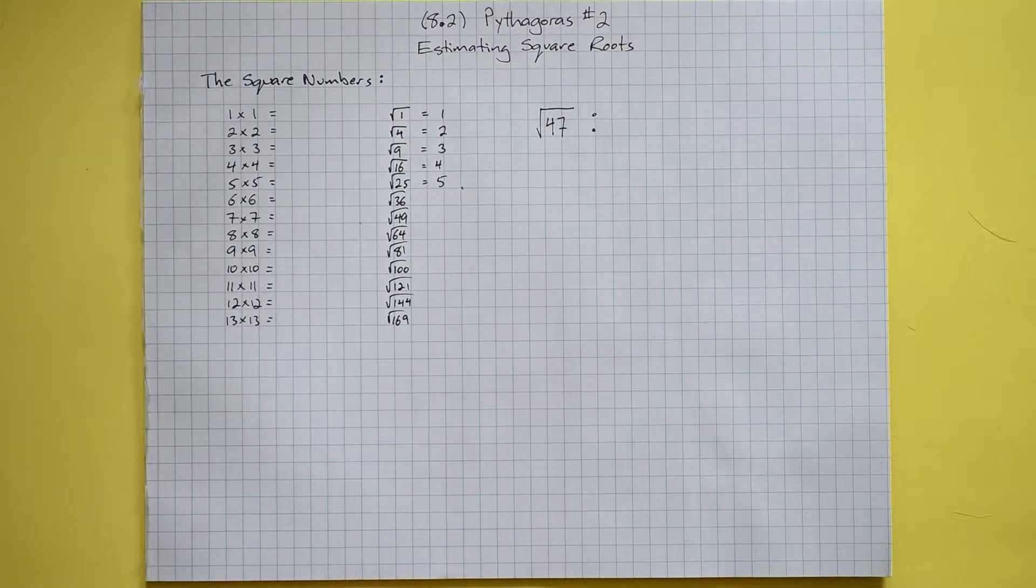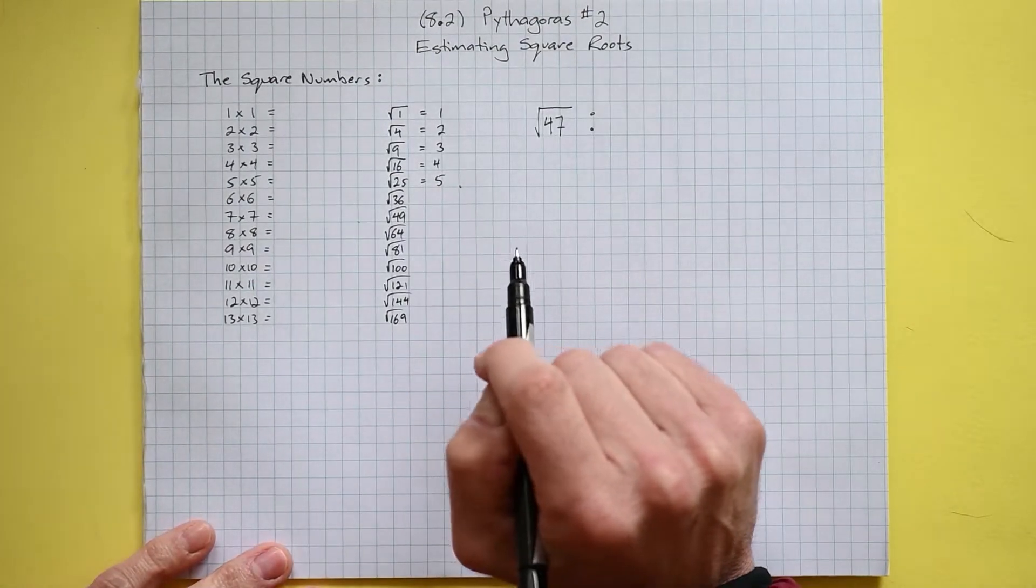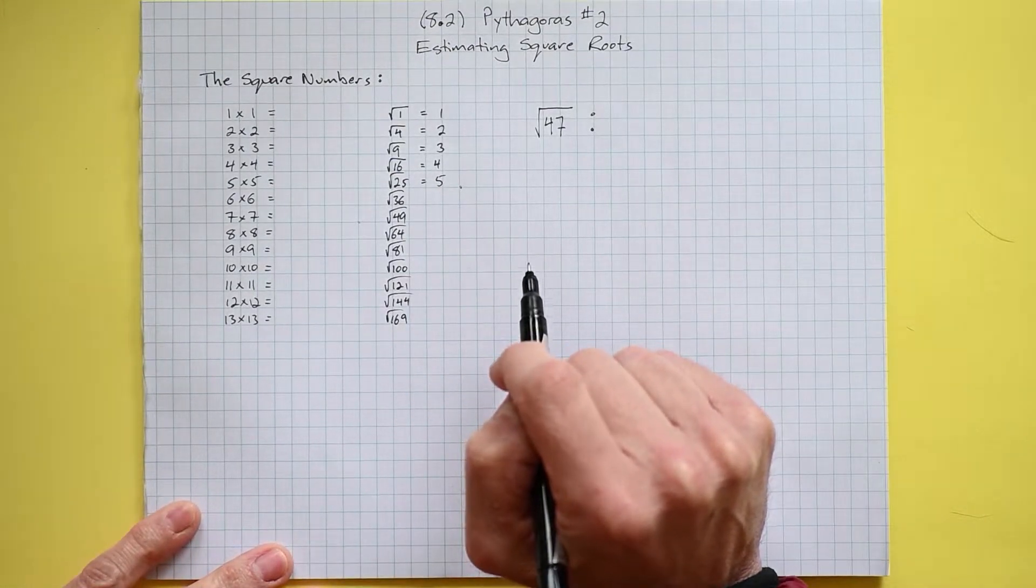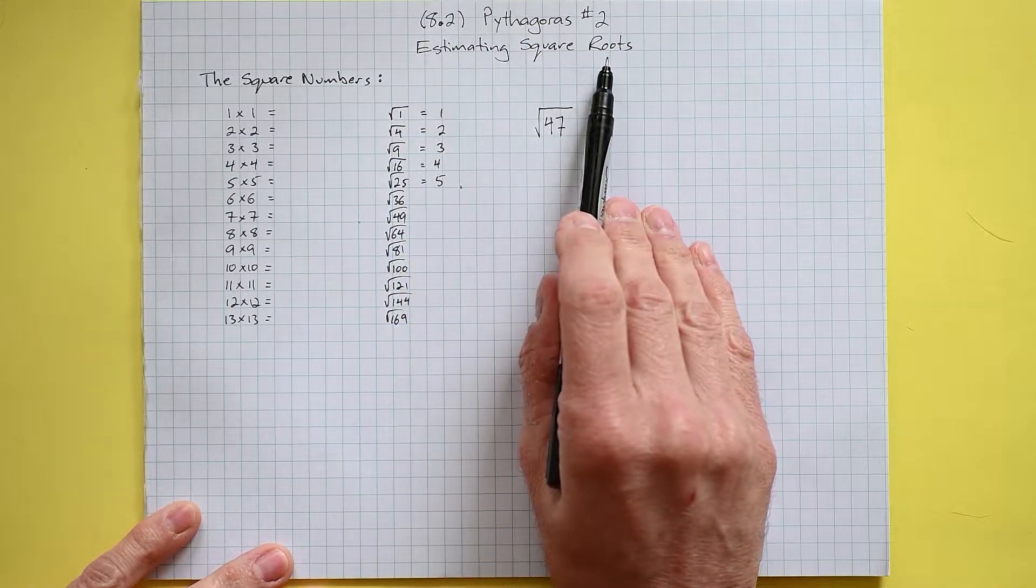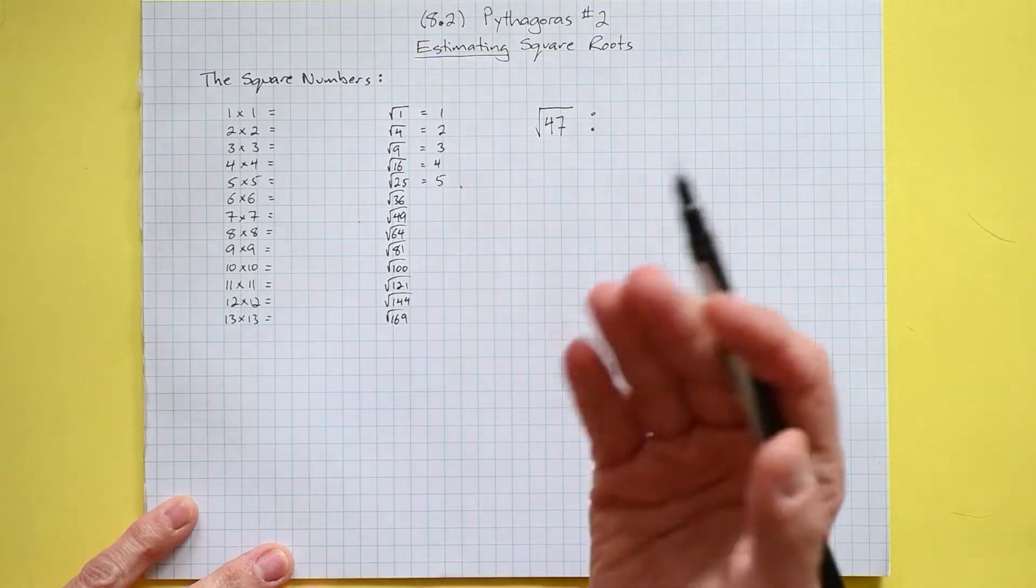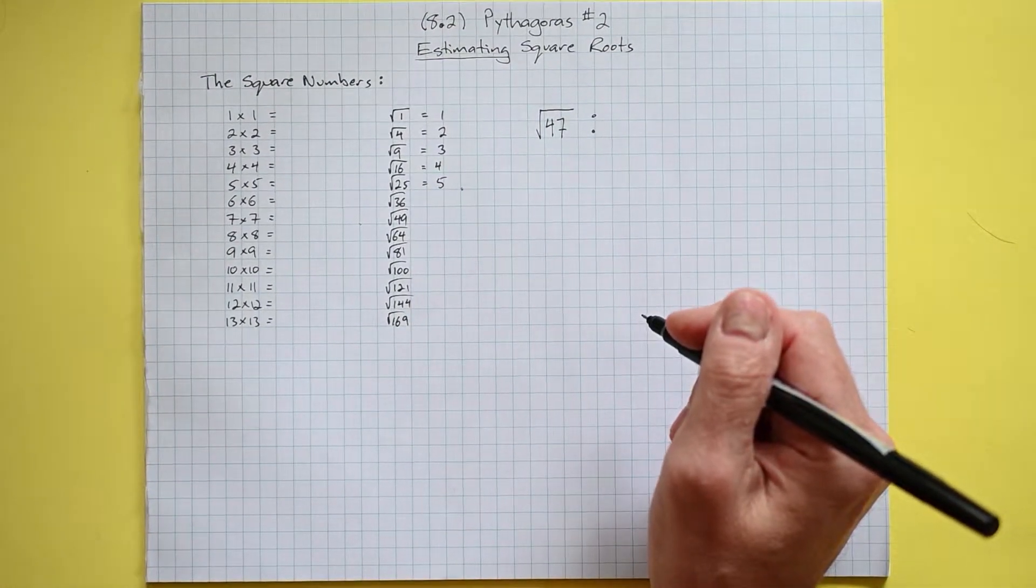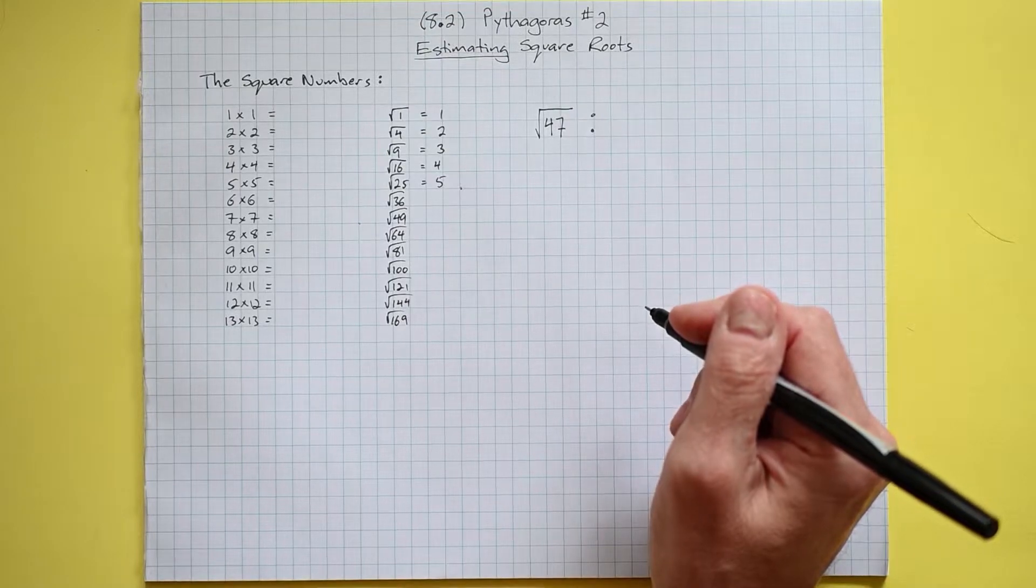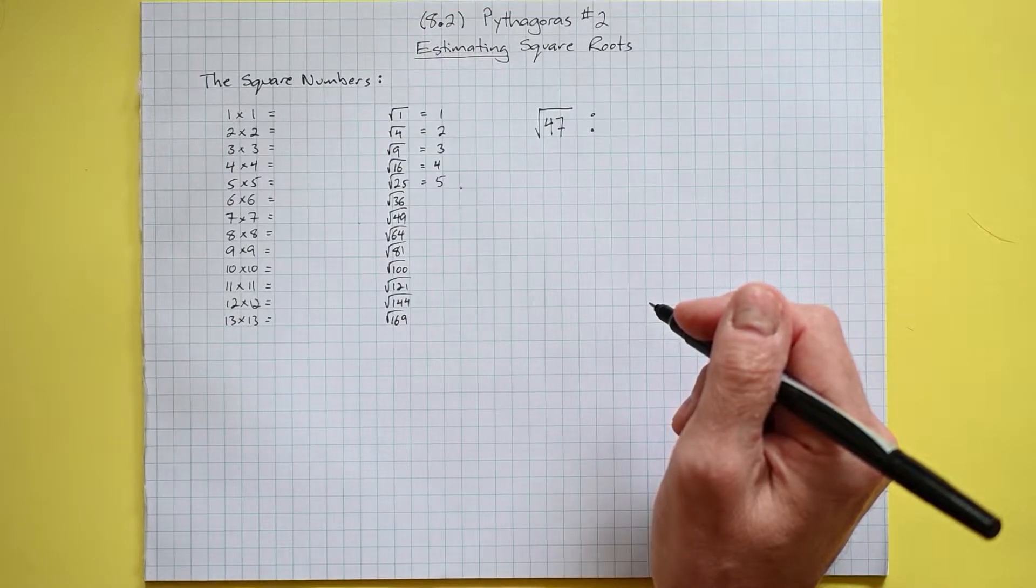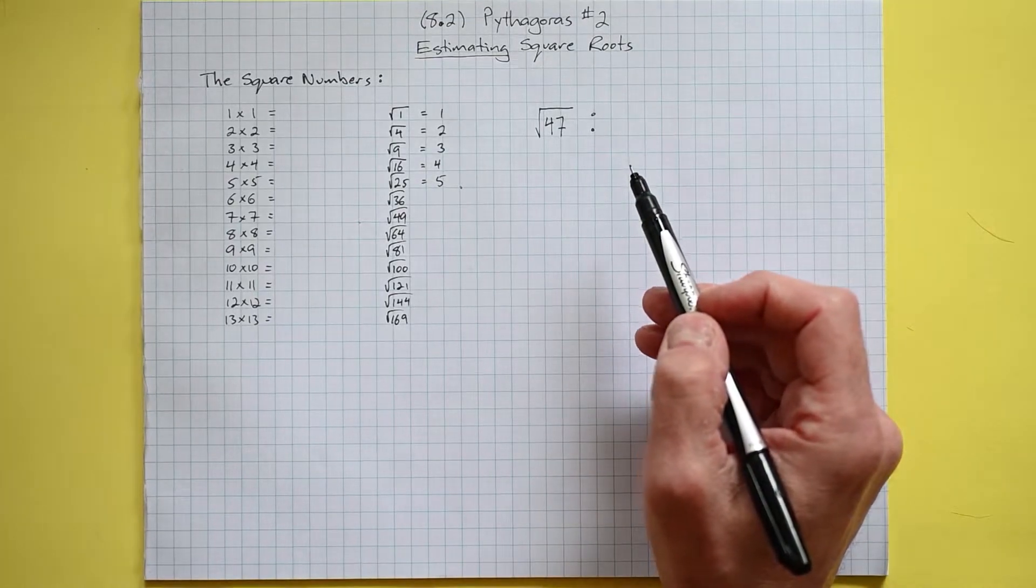Hello grade 8 and welcome back. Continuing our unit on Pythagoras, today we're looking at the concept of square roots and specifically how to estimate them. Because we're estimating, we're not going to be able to use calculators for this work, so make sure that when you're doing your exercises today you use this process that we develop here.